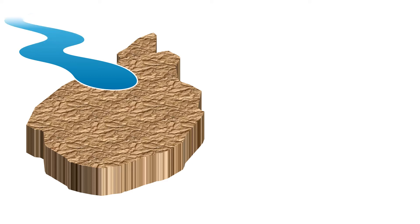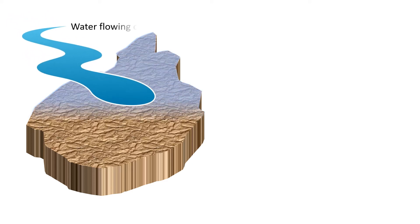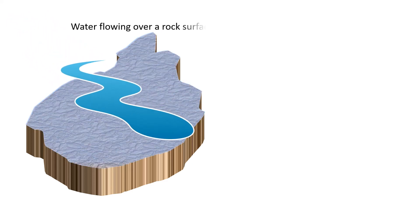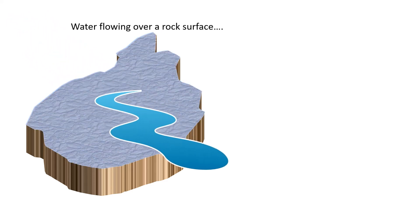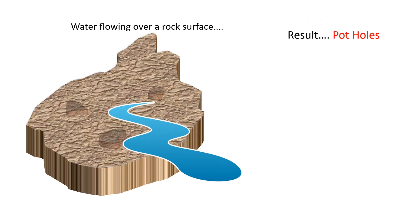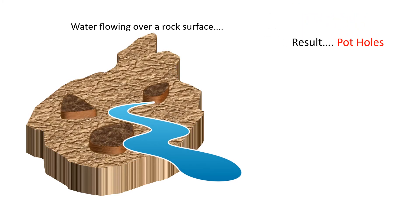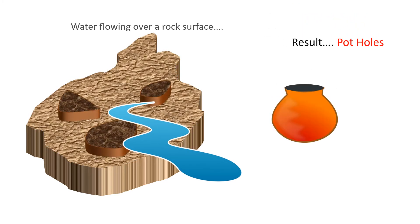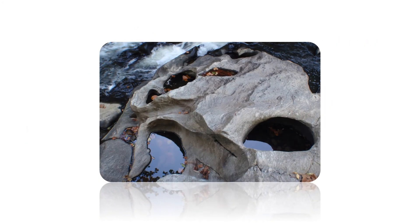Another remarkable feature of gradation is the pothole. Early humans, before the invention of pottery, used these holes to heat water — you could guess how.